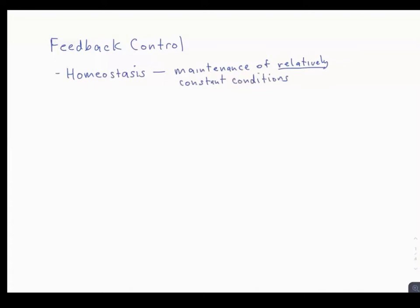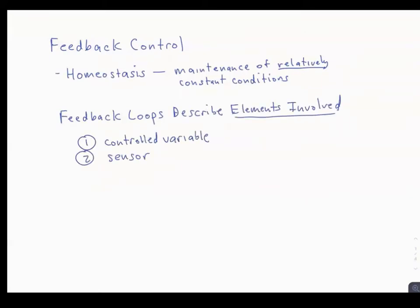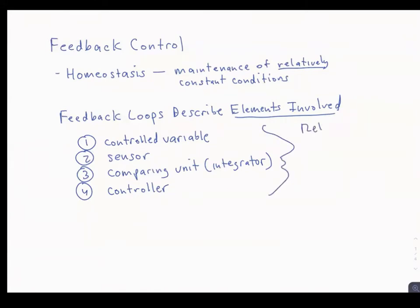Feedback loops describe the elements involved in maintaining homeostasis, and they're comprised of: number one, a controlled variable; number two, a sensor; number three, a comparing unit that can see what's going on; and number four, a controller that can change things.